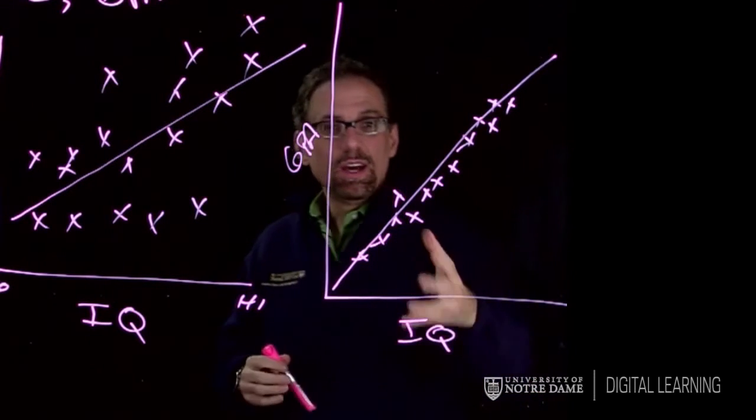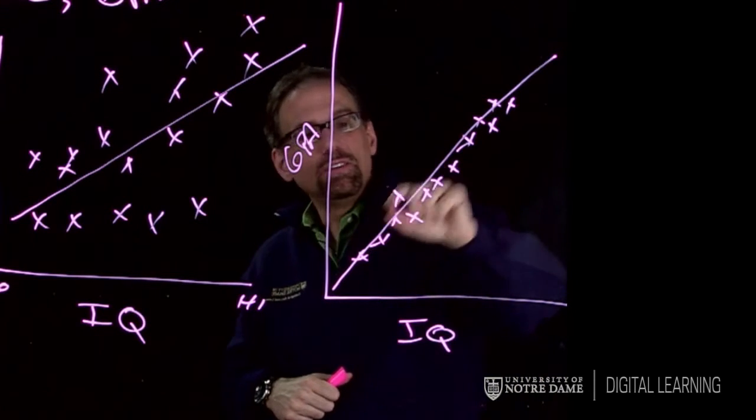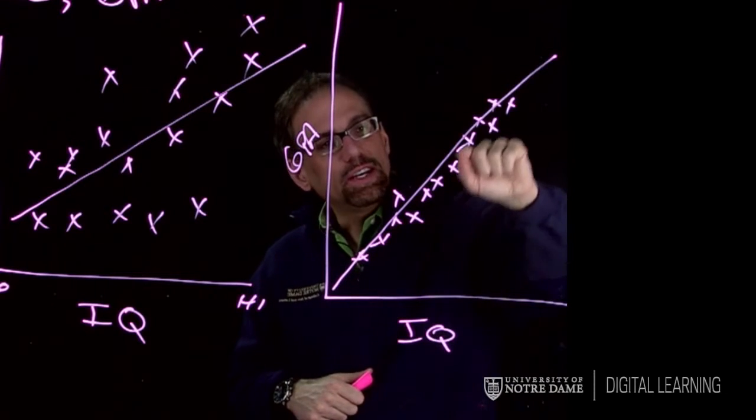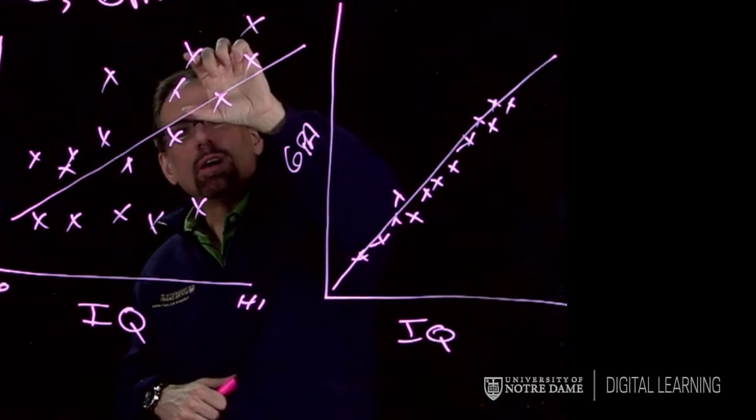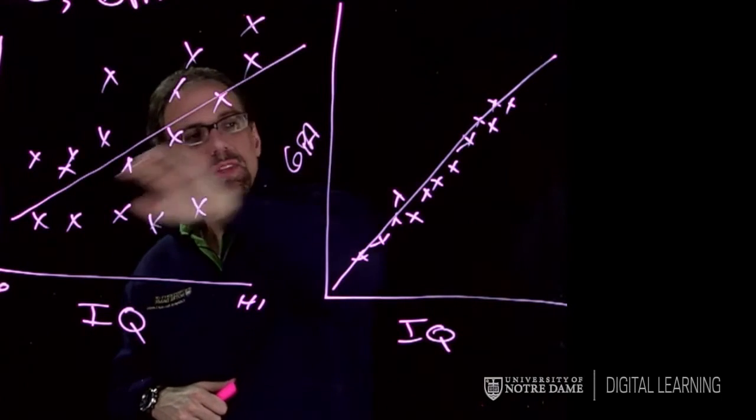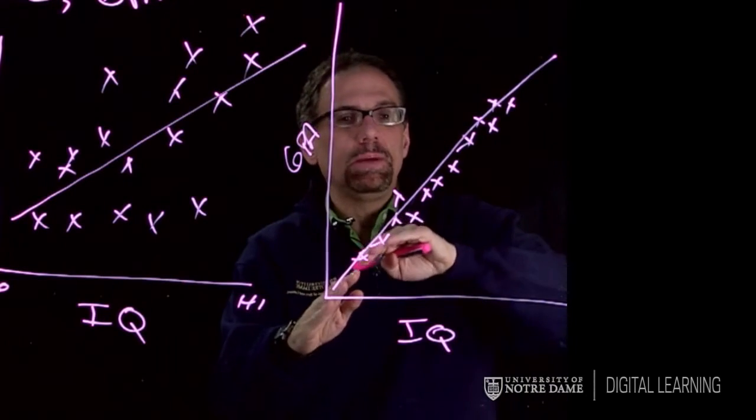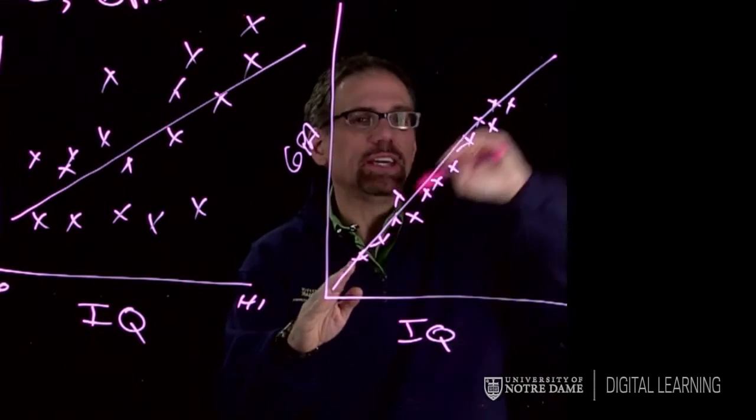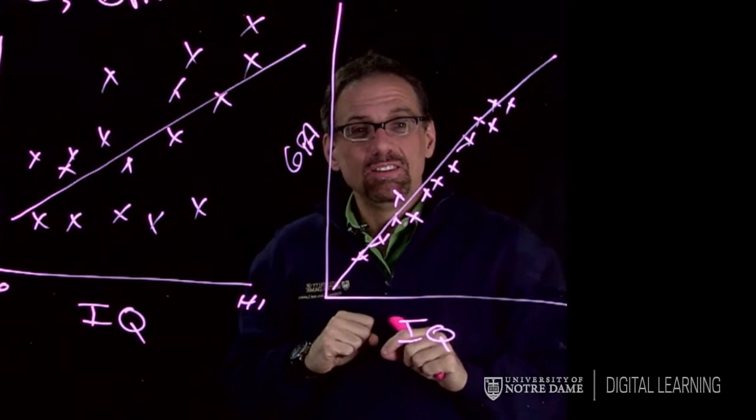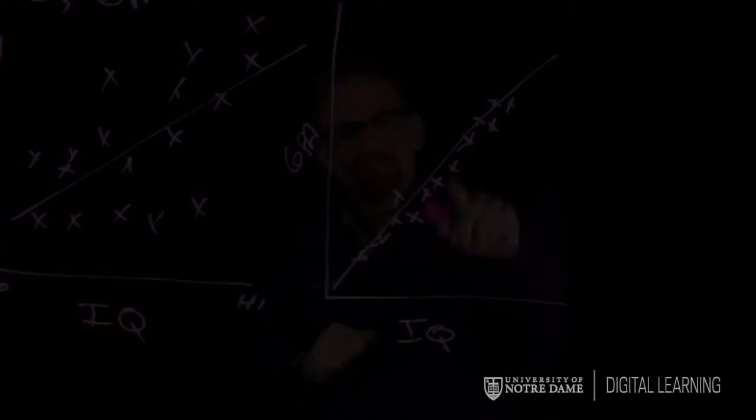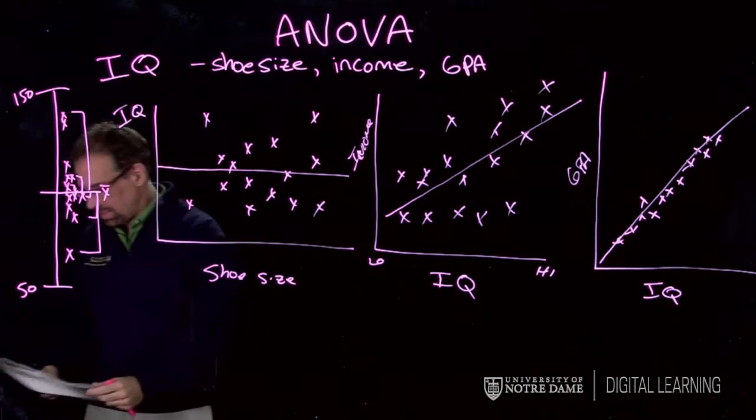There's hardly anything left in the variability of GPA once I draw this line in here. These things are very close to the line. So instead of having these big parts that are deviations from this line, I only have little tiny deviations from this line. The variability in GPA that, or variability in IQ that accounts for the GPA. So there's very little left in that GPA after I account for IQ. That's what we're doing when we're analyzing the variance.